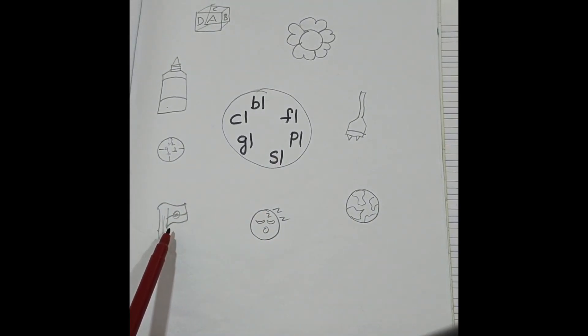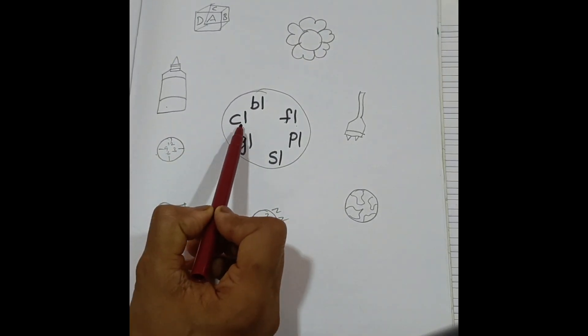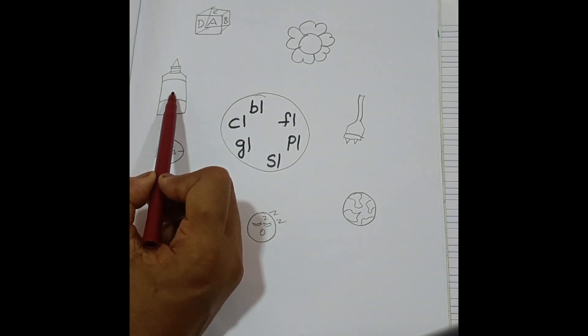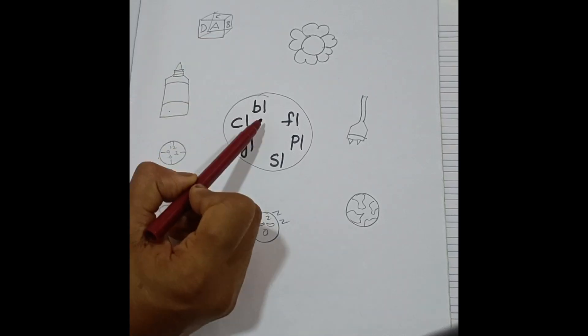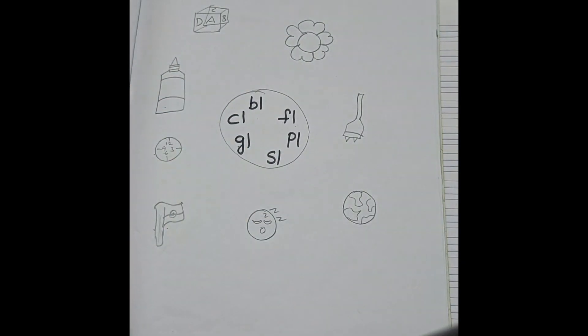Fl, fl, fl, flag, match to fl. Cl, cl, clock, match to cl. Gl, gl, glue, gl. Bl, block, block. So this worksheet really helps them to identify the beginning blends.